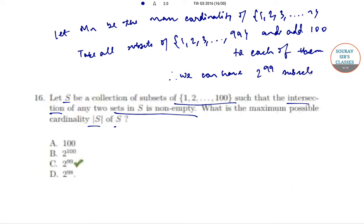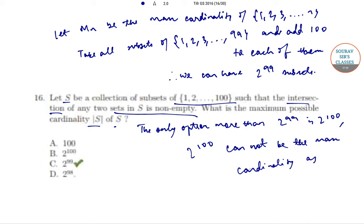Since the only option more than 2^99 is 2^100, 2^100 cannot be the maximum cardinality, as all subsets of {1, 2, ..., 100} cannot have non-empty intersection. So option C is the correct answer.